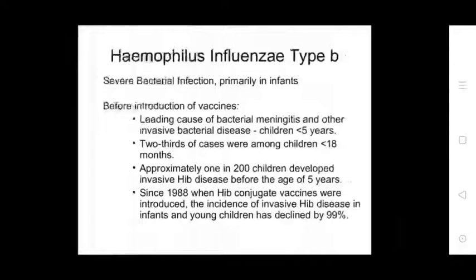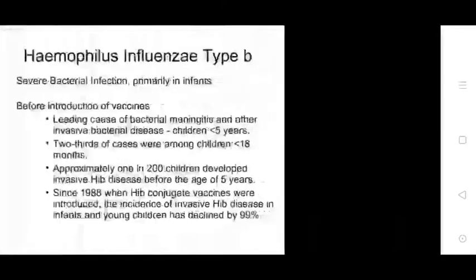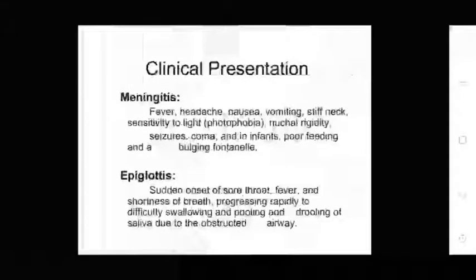Since 1998, when Hib conjugate vaccines were introduced, the incidence of invasive Hib disease in infants and young children has declined by 99%. Clinical presentations include fever, headache, nausea, vomiting, stiff neck, sensitivity to light (photophobia), nuchal rigidity, seizures, coma, and in infants, poor feeding and a bulging fontanel.